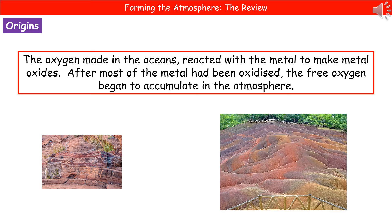We can see those metal oxides in the ground today as you look around, because you can actually make out the bands of it as it formed. In the rock on the left, you can see the darker red bands of metal oxide. And in the piles of soil on the right, those different colors — the seven different colored sand — are caused by different metal oxides that are present.